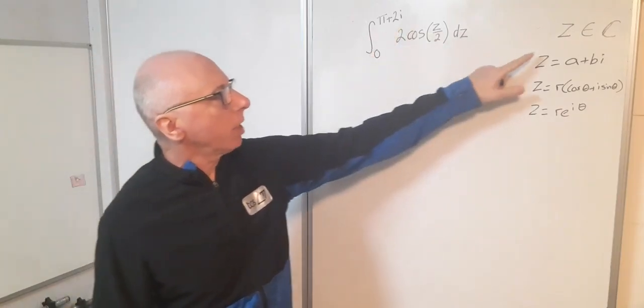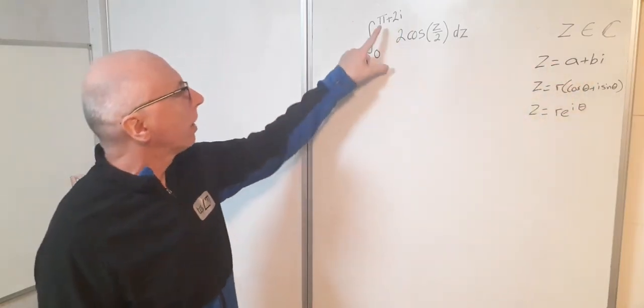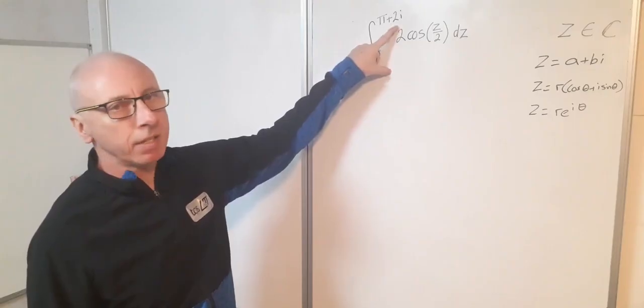Now you'll notice here my complex number z is in the form of a plus bi, where a is pi and b is 2.